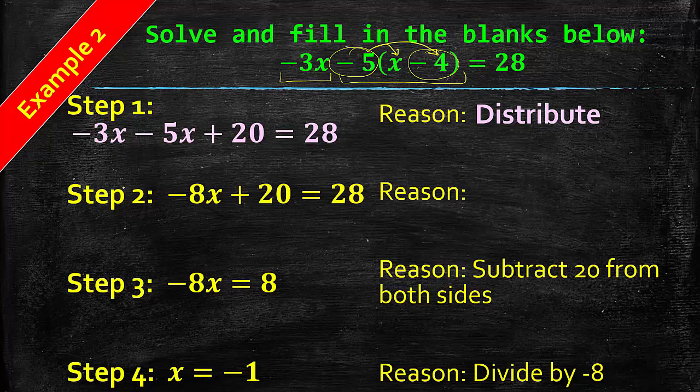For step 2, if you look from step 1 to step 2 now, we have negative 8X plus 20 equals 28. What did we do here? We have negative 3X minus 5X. What we did is we combined like terms. We performed the operation negative 3X minus 5X because they have identical variables. And then the rest, you might want to just go through and double check.